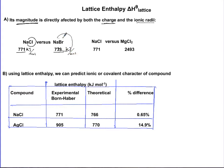Bromide is bigger than chloride. Now, in another case, if you look at sodium chloride versus magnesium chloride, not only is magnesium smaller, but it's also 2+ versus sodium which is 1+ and larger. That's why the magnitude of magnesium chloride is so humongous — 2500 kJ/mol compared to 771 kJ/mol for sodium chloride.